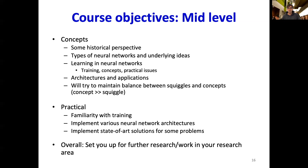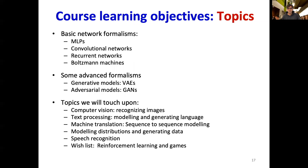Overall, the objective of the course is to set you up for further research or work in industry. Topics covered include basic network formalisms like MLPs or multilayer perceptrons, convolutional networks, recurrent networks, and Boltzmann machines. Advanced formalisms include generative models such as variational autoencoders or VAEs, and adversarial models such as GANs or generative adversarial networks. Application areas include computer vision, image recognition, text processing, modeling and generating language, machine translation, sequence-to-sequence modeling, modeling distributions and generating data, speech recognition, and reinforcement learning and games if time permits.